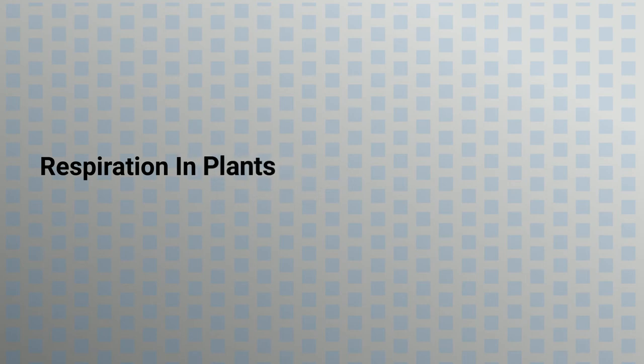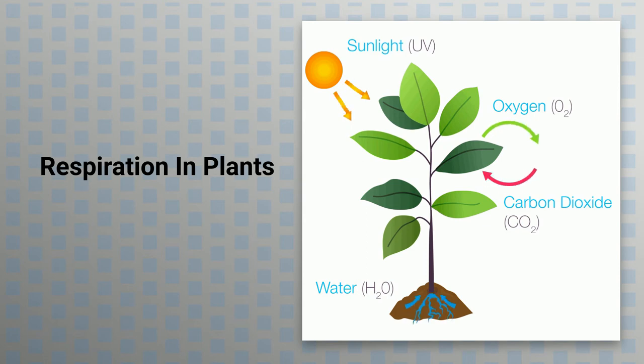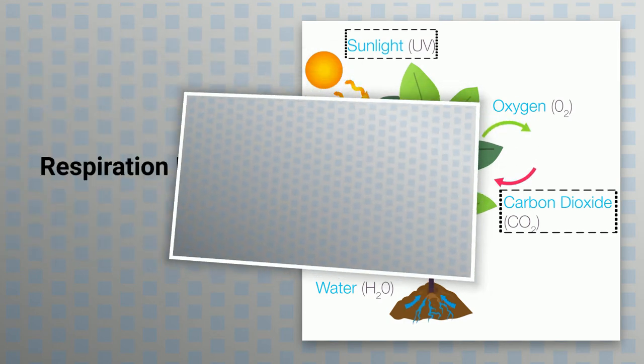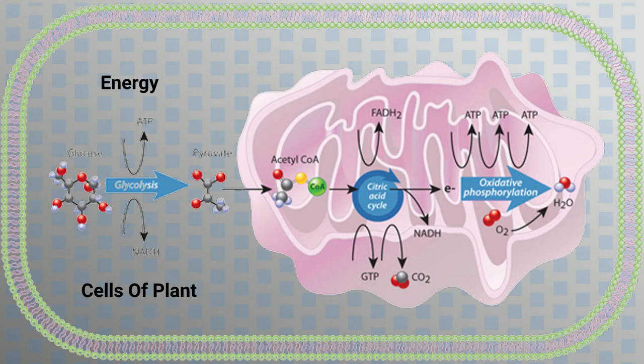Respiration in plants. As you have learnt that through the process of photosynthesis, plants turn sunlight into energy. However, this energy that is in the form of carbohydrate molecules is not usable for the plant at this stage. To break down these molecules into usable energy, another process takes place in the cells of the plant. That is respiration.